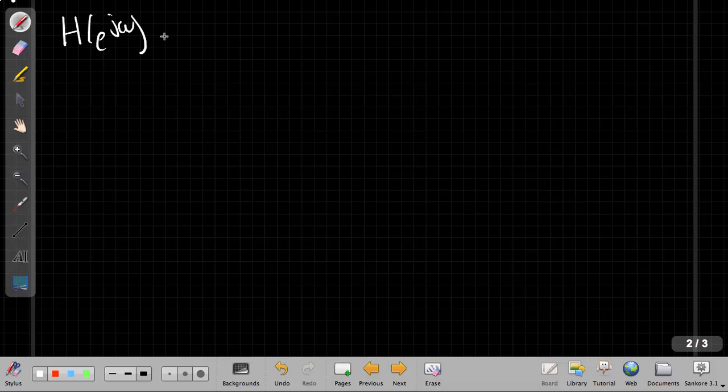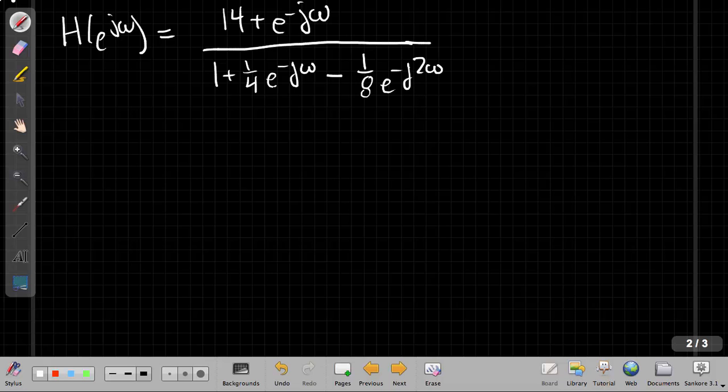Okay, so just to remind you where we were, we had gotten to the point that we had our difference equation, or we'd gone from our difference equation and we had ended up with a frequency response that looked like this: 14 plus e to the minus jω in the numerator, and the denominator was 1 plus ¼e^(-jω) minus ⅛e^(-j2ω). And I want to break this in using partial fractions.